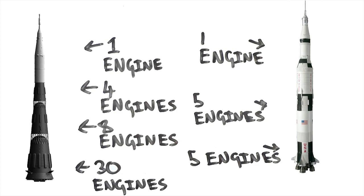In total, the N1 rocket had 4 stages, with 30 engines in the first, 8 in the second, 4 in the third, and 1 in the fourth stage, whereas the Saturn V rocket had 3 stages, containing 5 engines in the first stage, 5 in the second stage, and 1 in the third stage.